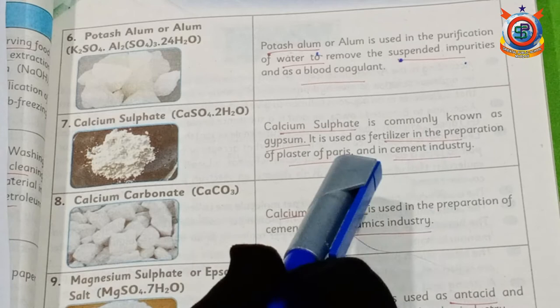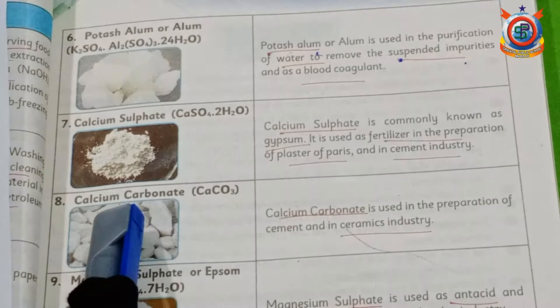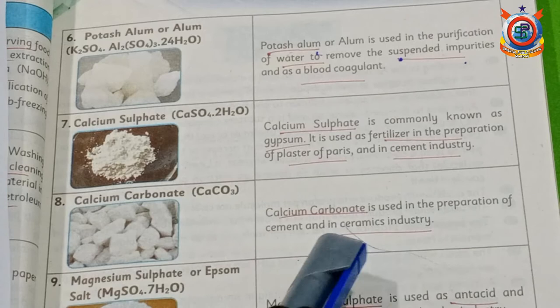Calcium carbonate is used in the preparation of cement and in ceramic industries.